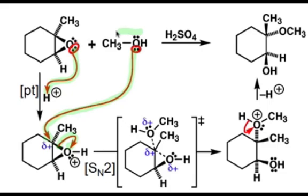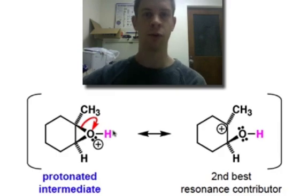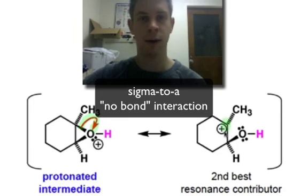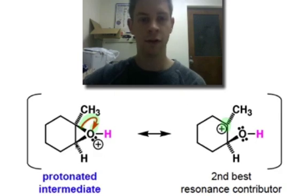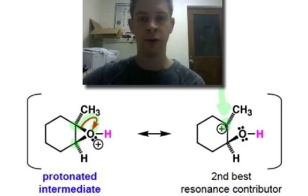Notice that the nucleophile attacks at the more substituted carbon, although this is an SN2-type process. We can rationalize this result by considering resonance structures of the protonated epoxide. Some of the positive charge on the protonated epoxide is shared between oxygen and one of the electrophilic carbons — pushing a sigma bond all the way to oxygen reveals this. Considering which of the two electrophilic carbons better stabilizes positive charge, based on cation stability trends, we conclude the more substituted carbon carries more positive character and thus attracts lone pair-containing nucleophiles.